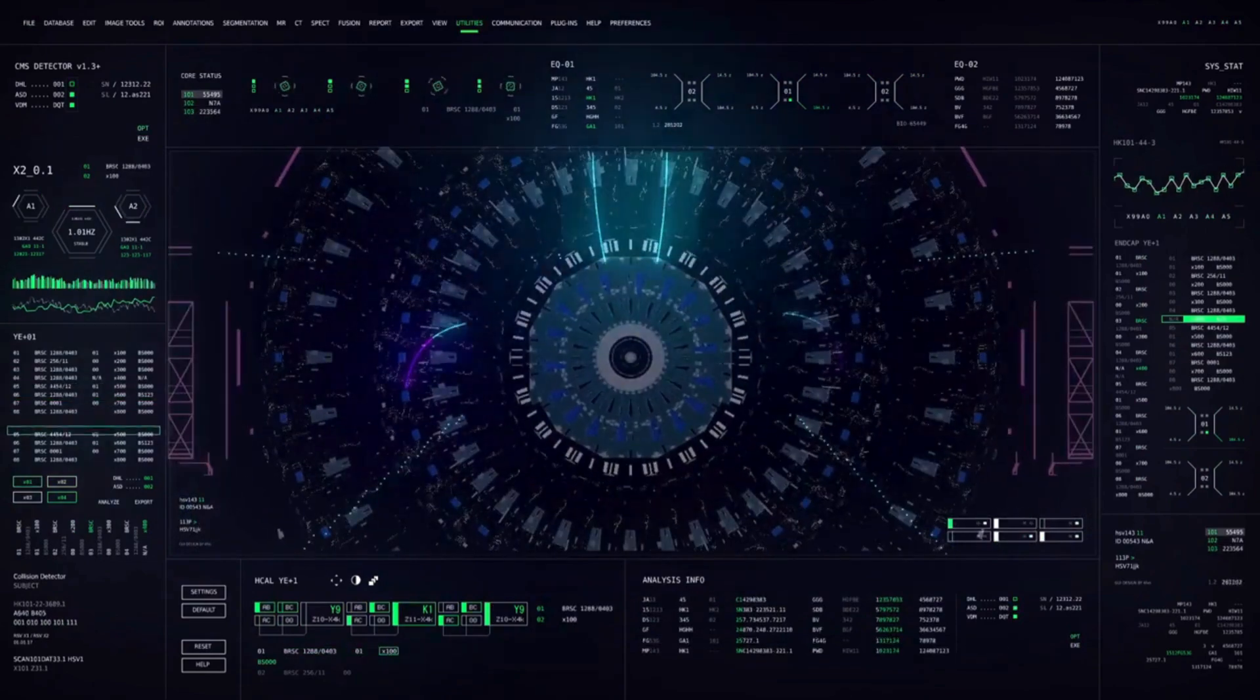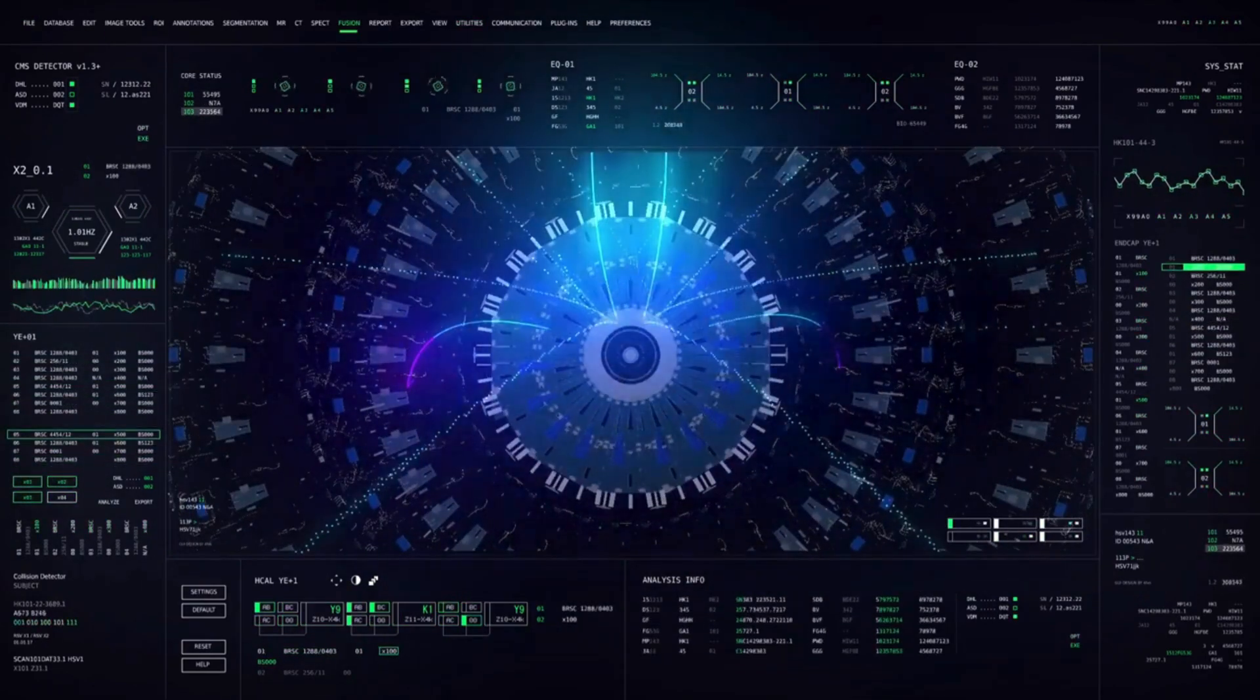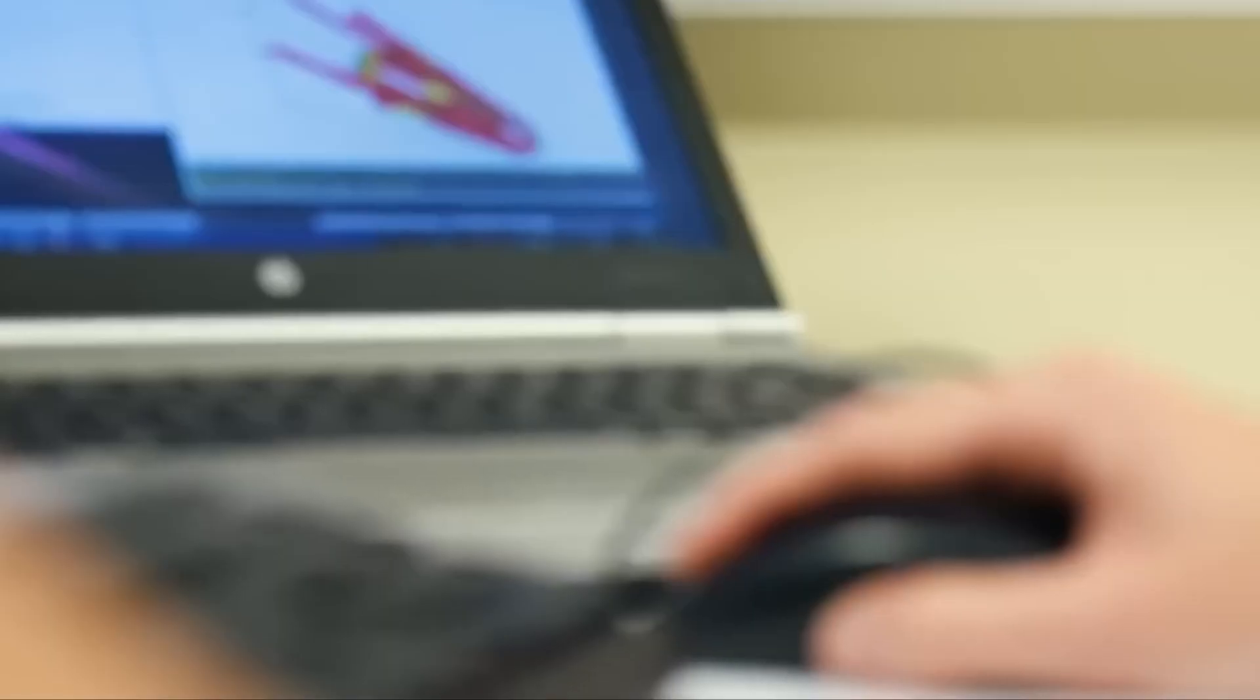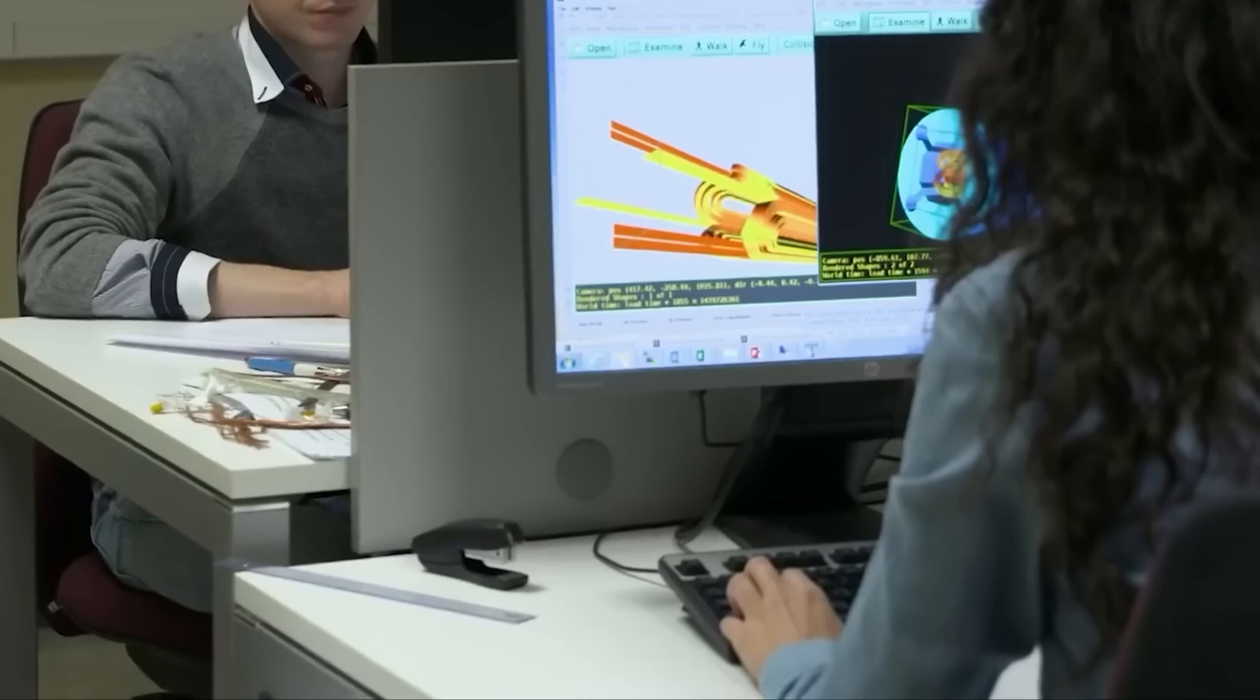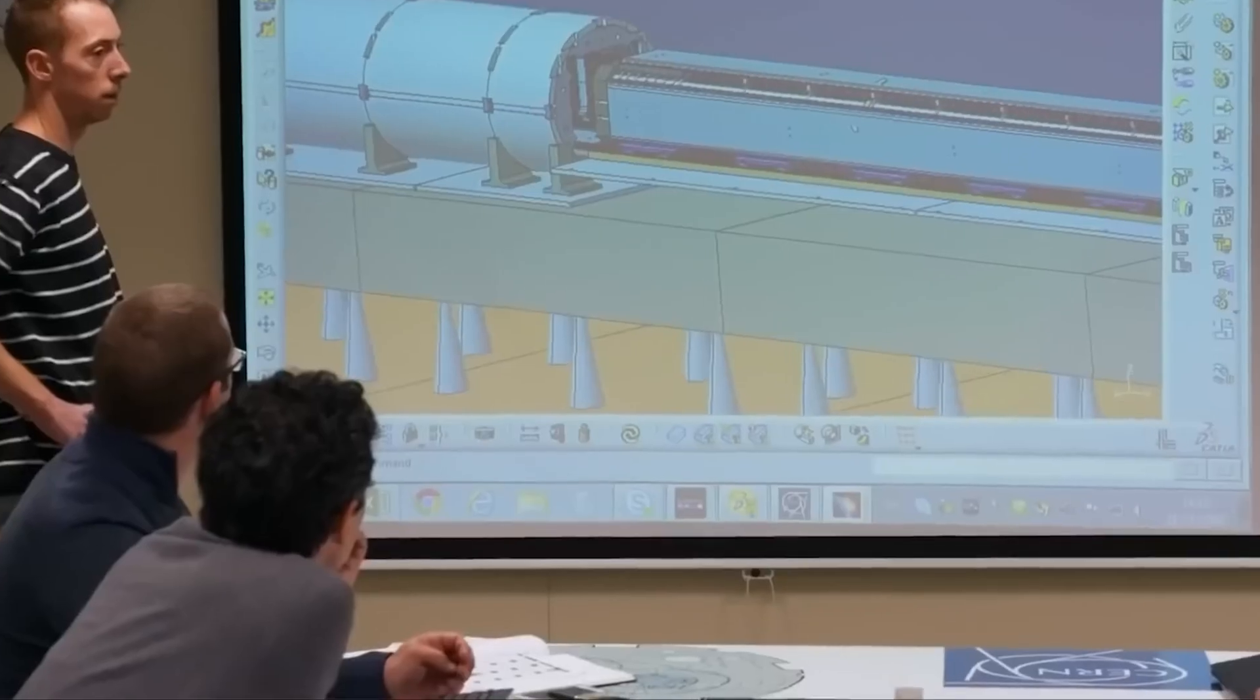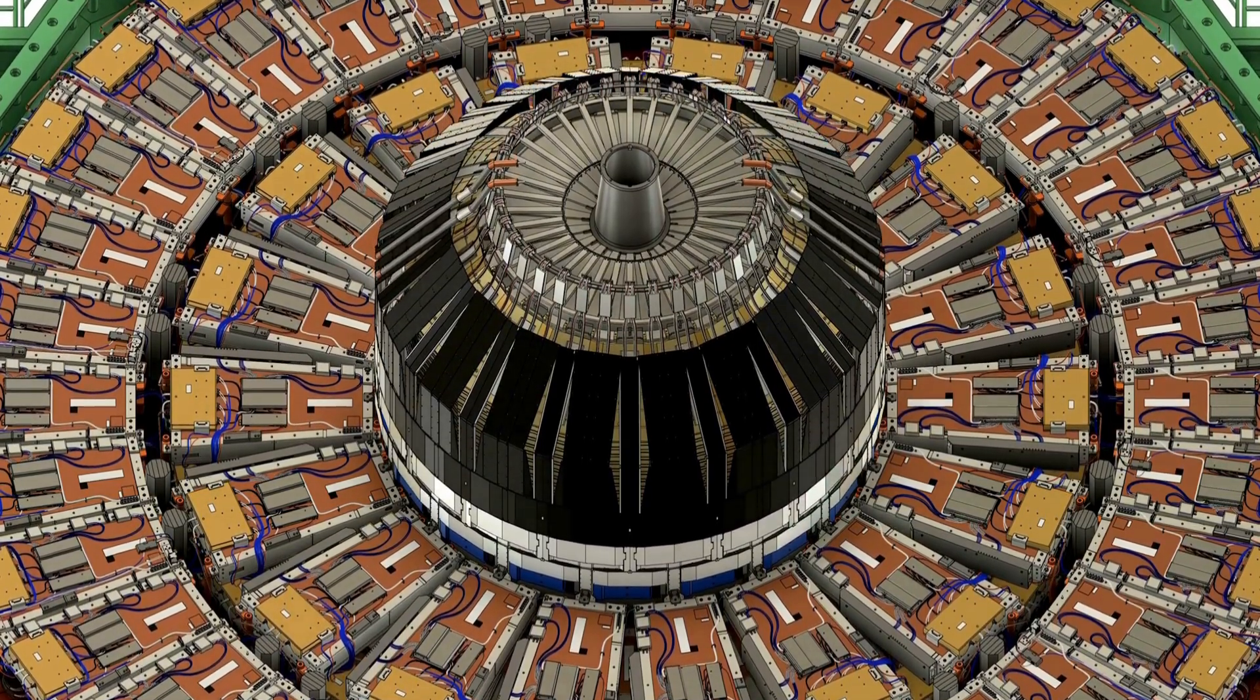Stage 4: Detection. Detectors record the energy and trajectories of the particles created in collision events, allowing scientists to study their properties and behavior. The data is then analyzed by physicists and used to test theories regarding the fundamental nature of matter and the universe.